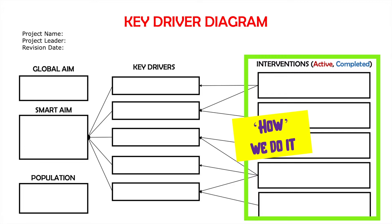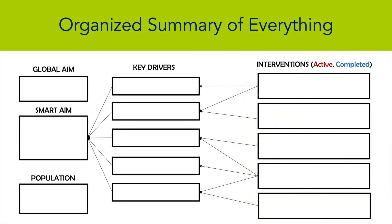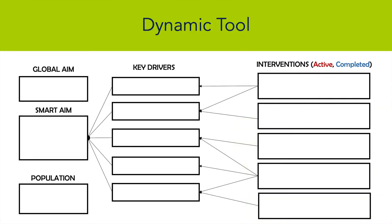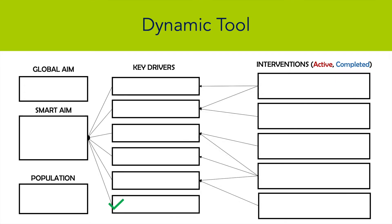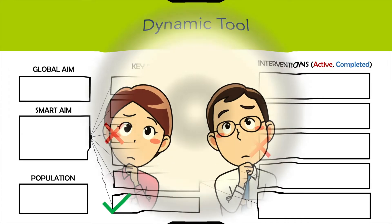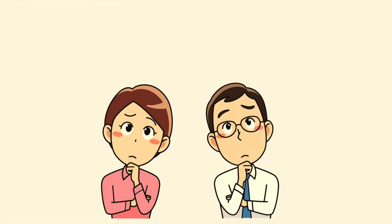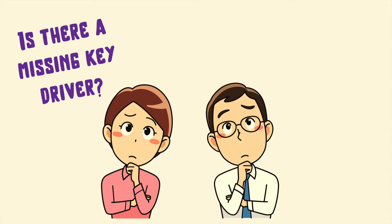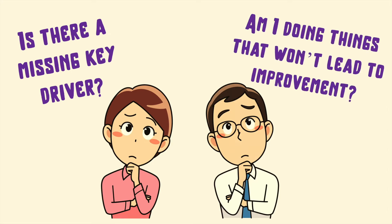A key driver diagram gives an organized picture of the whole. It's a dynamic tool and it evolves as we learn through the improvement journey. We may identify new drivers that we did not think of before. We may modify our theory and approach, or we may find some drivers or interventions are not really needed. If you find yourself doing an activity that is not connecting with the drivers, then ask yourself: is there a driver that I have failed to identify that needs to be added? Or have I gone on a tangent and doing things that are not aligned or needed for this improvement work?